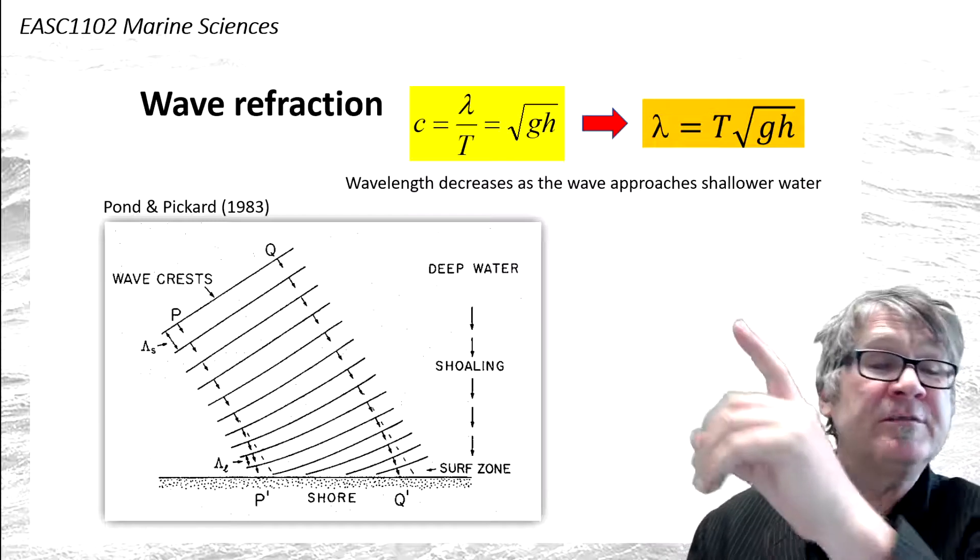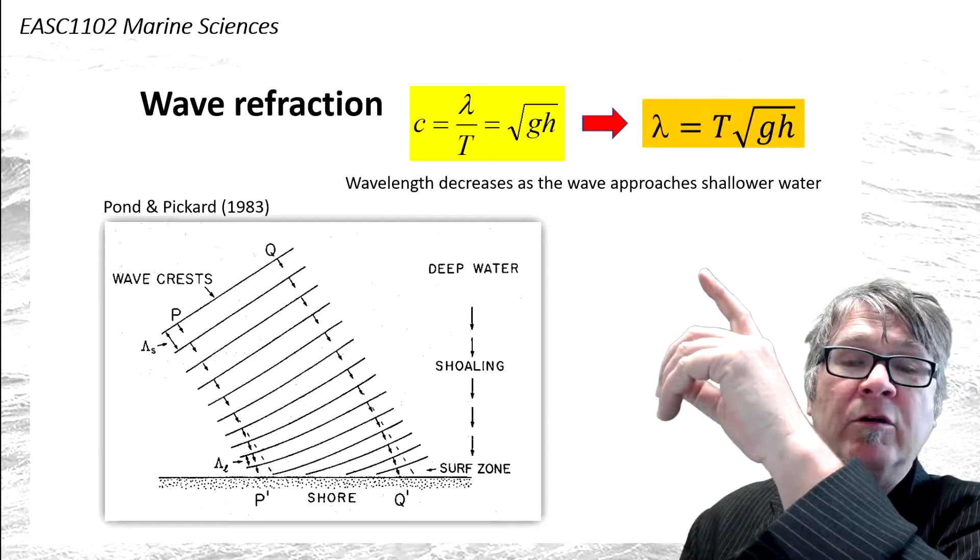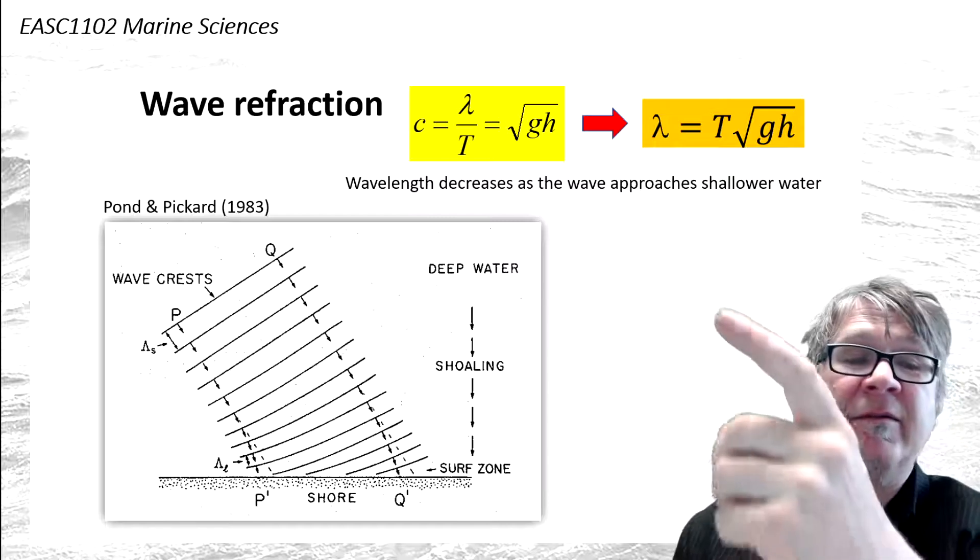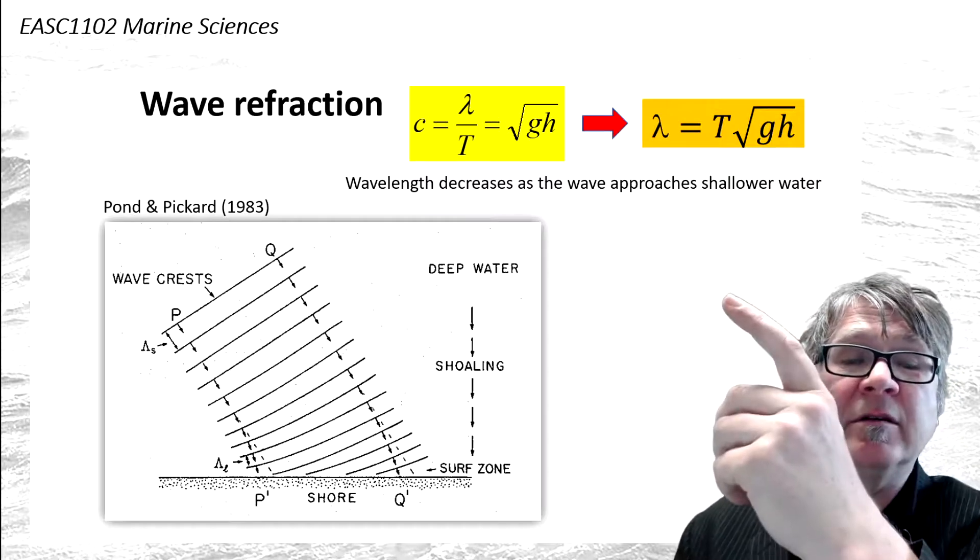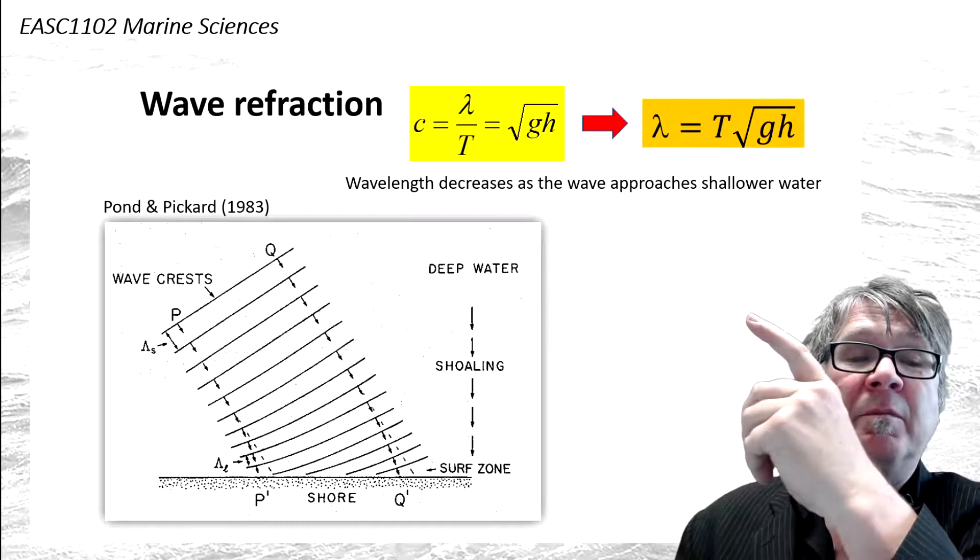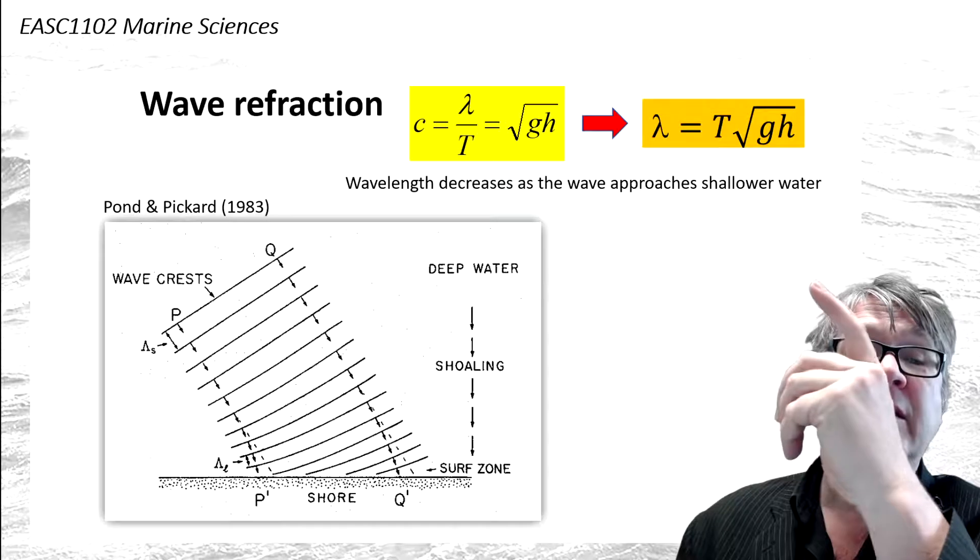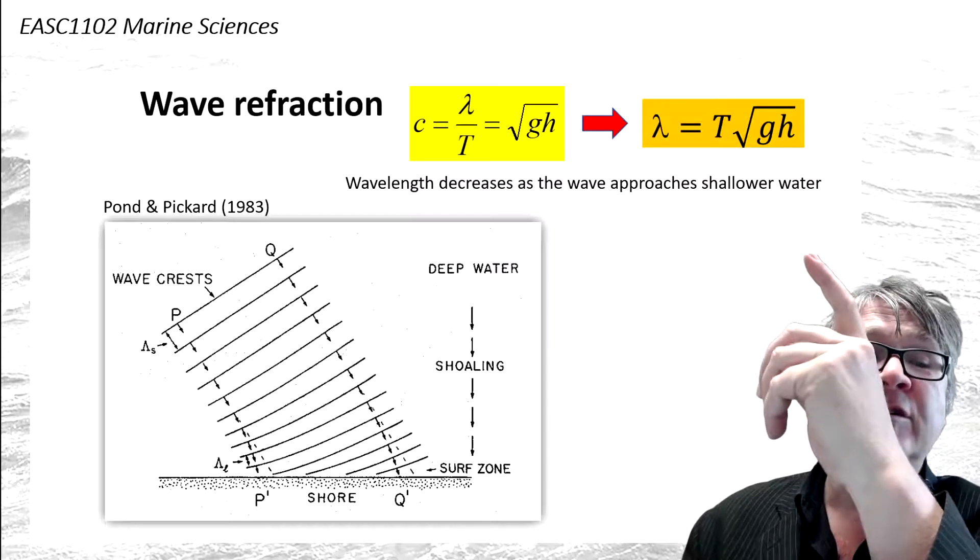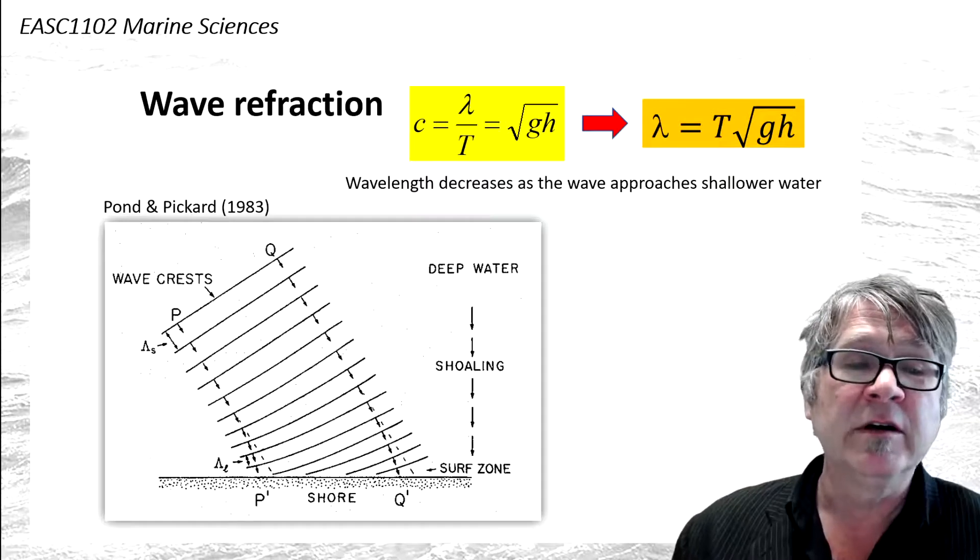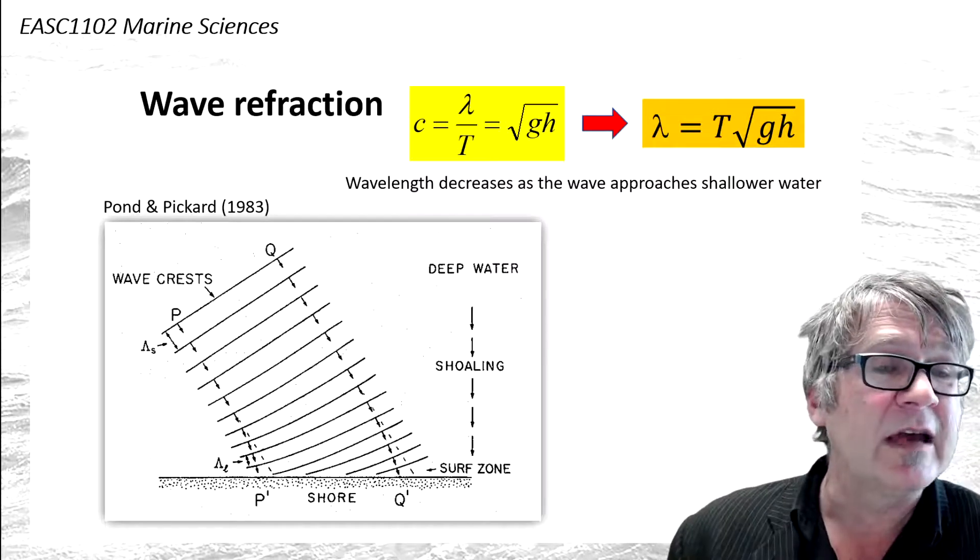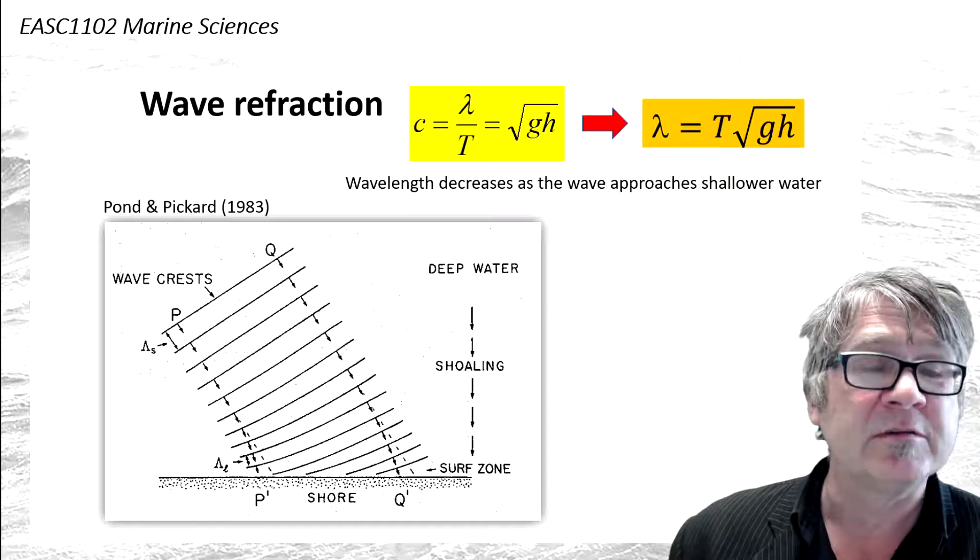The dispersion relation shown in the yellow block implies that the wavelength becomes shorter because total water depth decreases. You can see the h on the right-hand side under the square root. The period stays the same, but the wavelength shrinks as water depth becomes smaller.